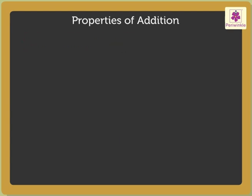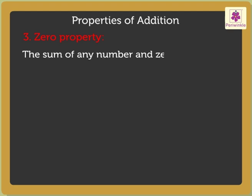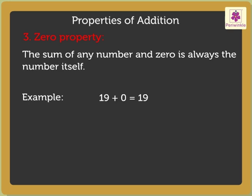3. Zero Property: The sum of any number and zero is always the number itself. For example,